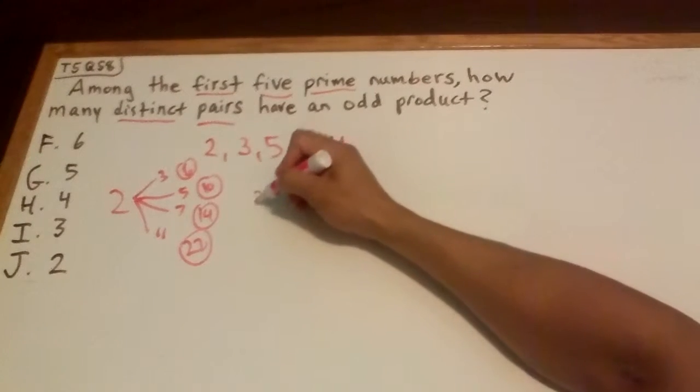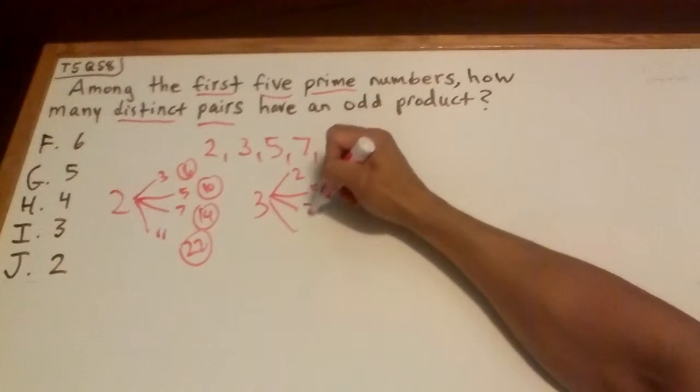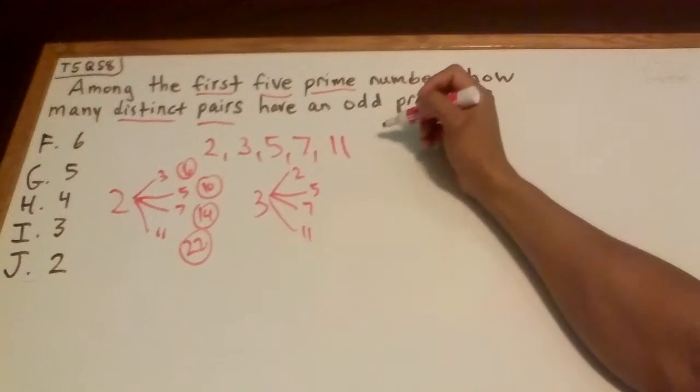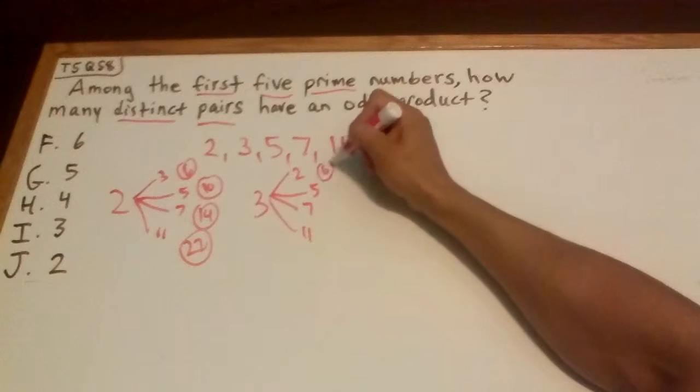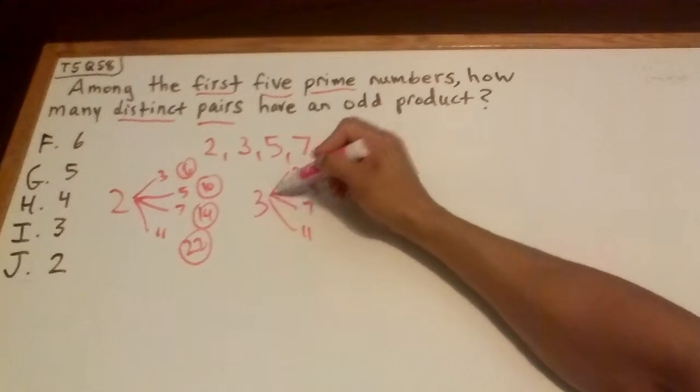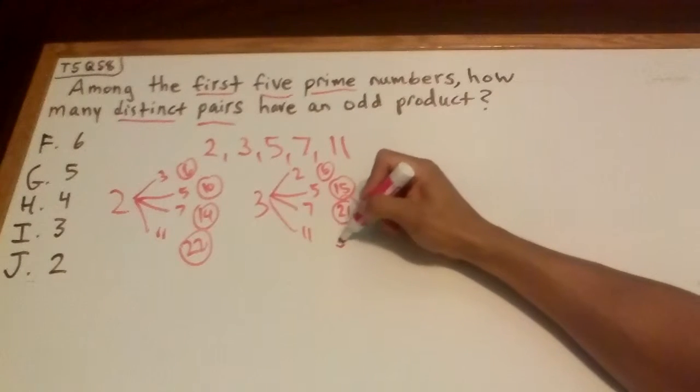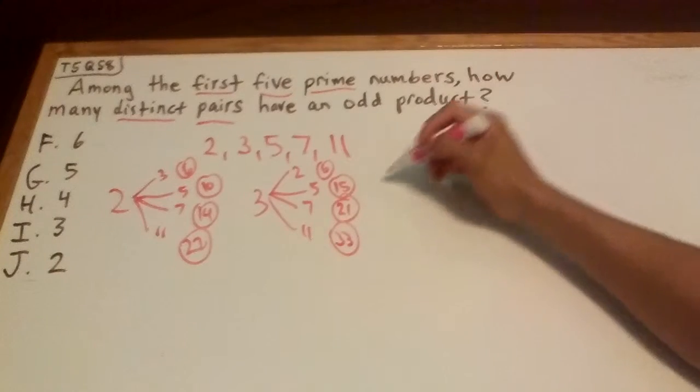And then do the same thing with 3. Here 2, here 5, here 7, here 11. This is 6, that's 15—we're doing the products. 3 times 2 is 6, 3 times 5 is 15, 3 times 7 is 21, 3 times 11 is 33. Good.